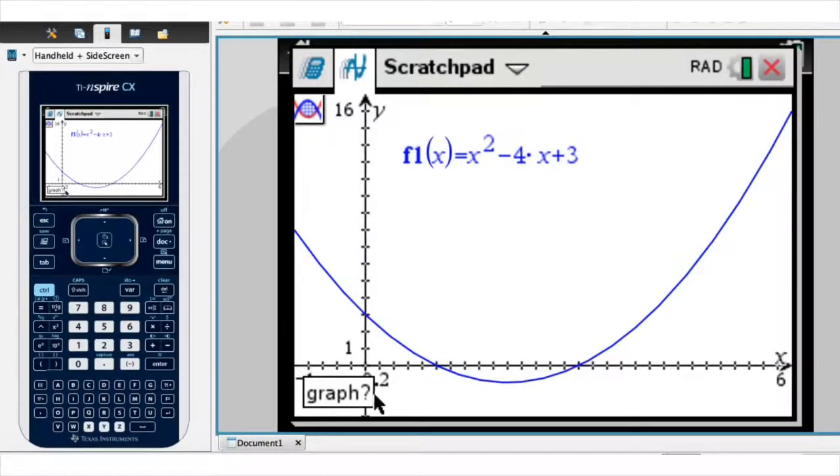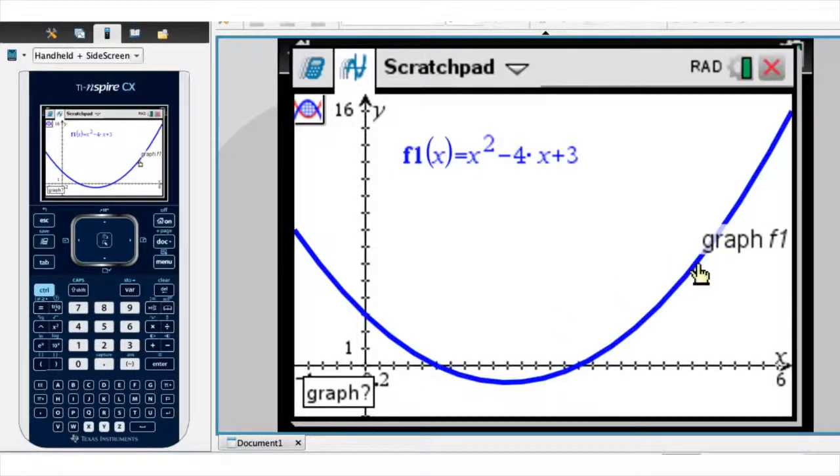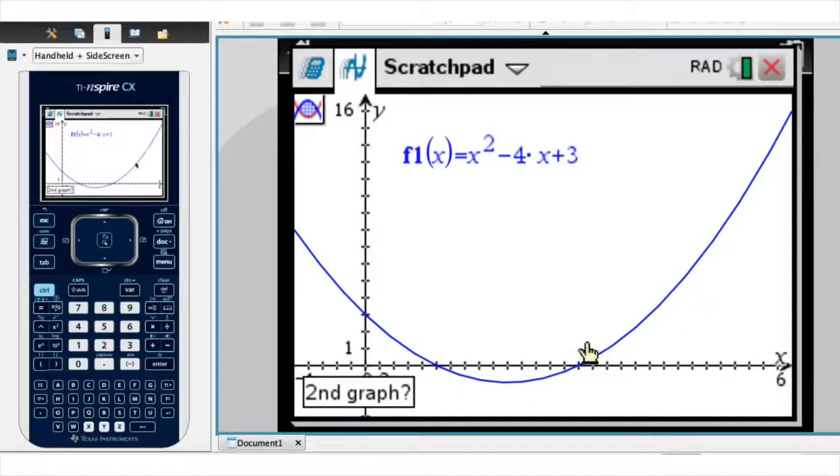The calculator is now asking me for the graph. The graph I want the calculator to consider is the blue one we have here. So I click anywhere along its length, like so. But now the calculator asks me for a second graph. And here's the thing. The TI Inspire can only calculate the area enclosed between two curves. So the trick here is to tell the calculator that the x-axis is the second graph. So I go ahead and click absolutely anywhere on the x-axis, like so.